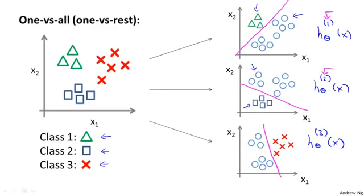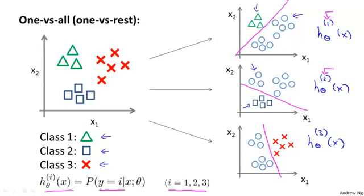So to summarize, what we've done is we'll fit three classifiers, so for i equals 1, 2, 3, we'll fit a classifier h superscript i subscript theta of x, that's trying to estimate what is the probability that y is equal to class i, given x and parameterized by theta.